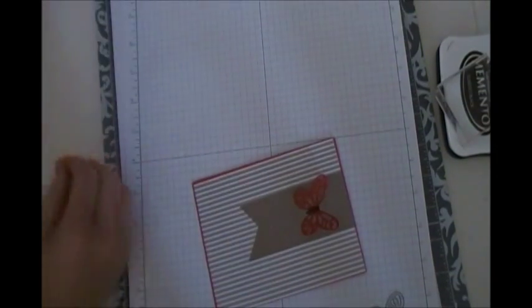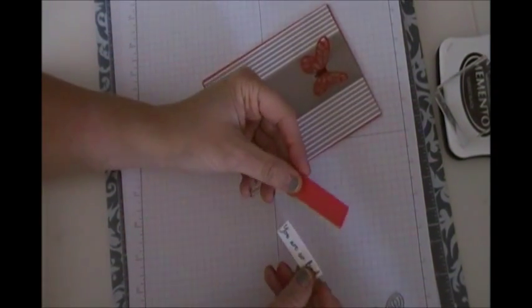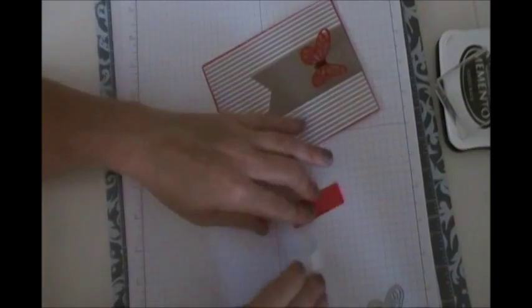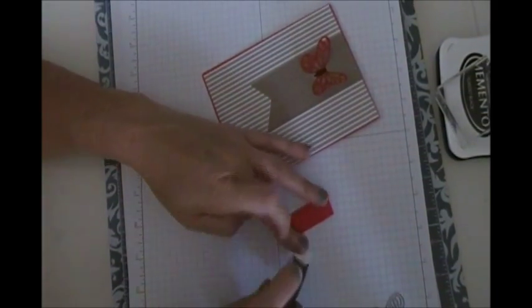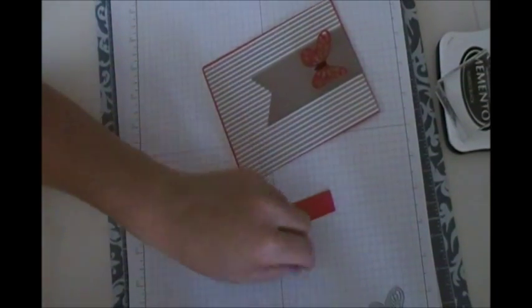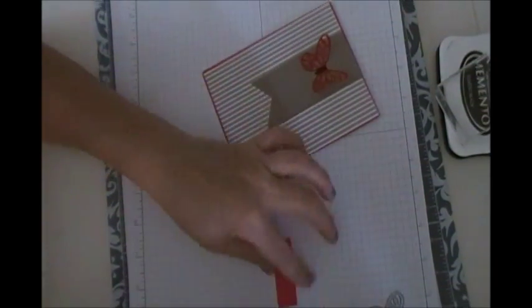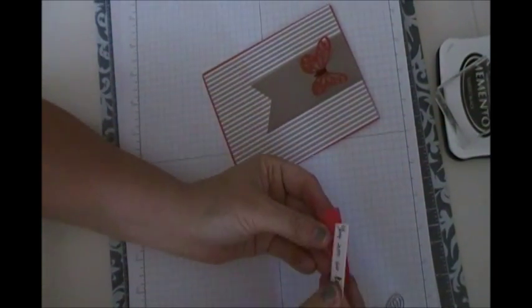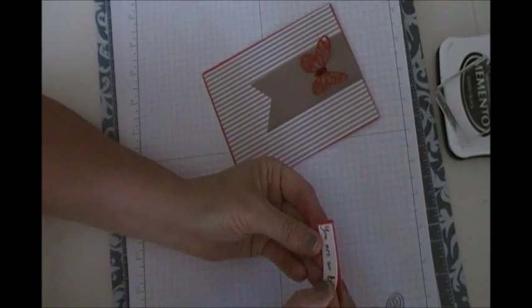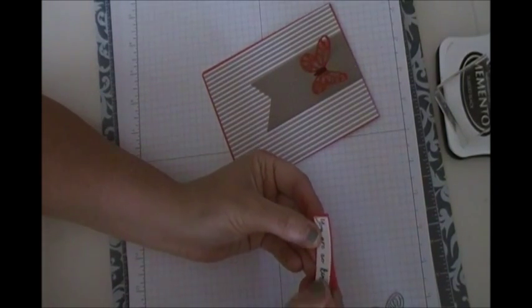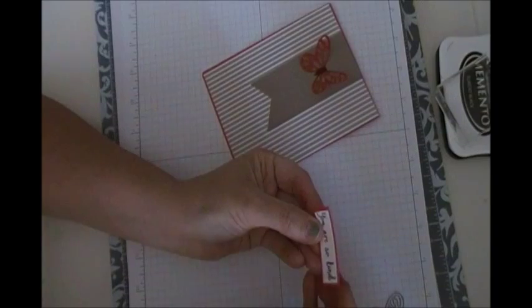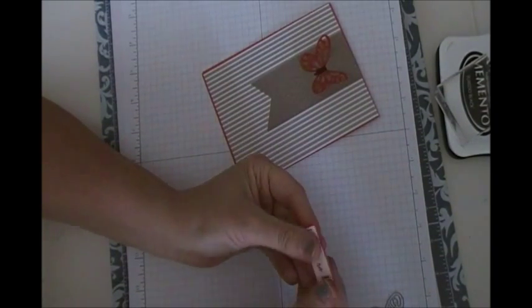Okay, now that we have that done, it's time to put the sentiment together. I stamped out the sentiment, You Are So Kind. And I did that on some Whisper White cardstock. And I'm going to adhere it to the back of a little piece of Watermelon Wonder cardstock. Just put them together, lining them up. Okay, I like how that is.